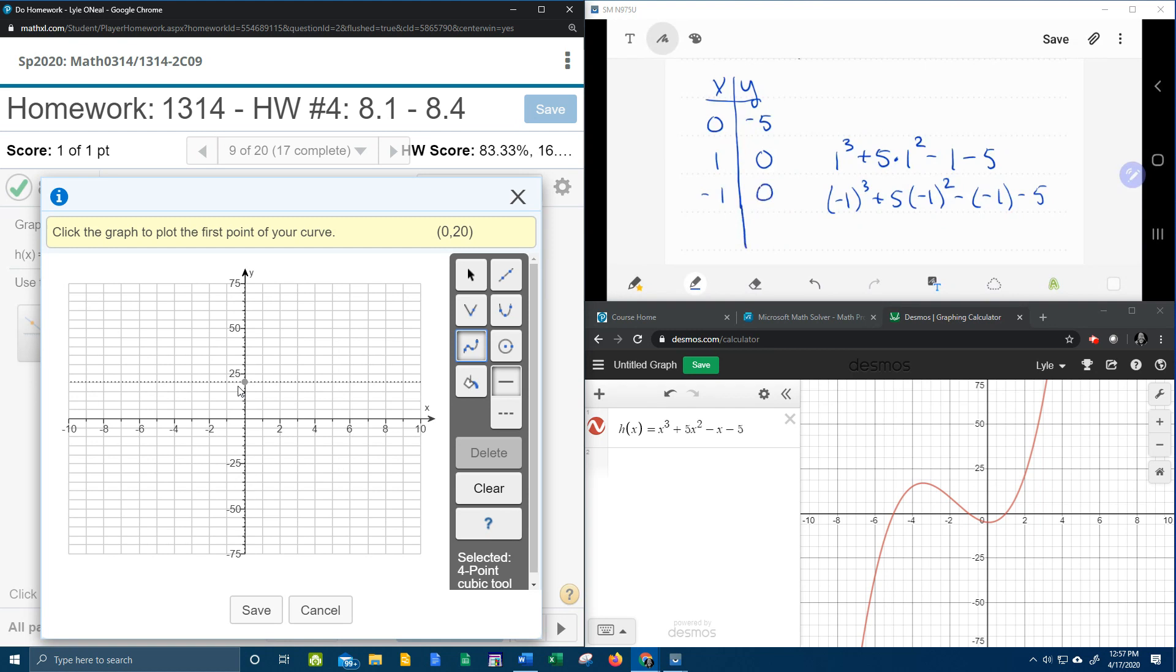And I need a fourth x. I have no idea what to pick. Let's go with two. Two cubed plus five times two squared minus two minus five. All right, here we go. Calculator again. Two cubed plus five times two squared minus two minus five is 21. So when x is two, y is 21. And that is within the range of our graphing ability here.